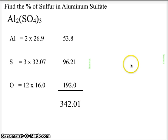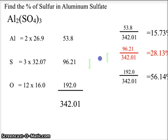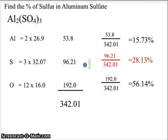So the question actually asks for sulfur, but let's do each of the elements and take a look at how they line up. When we take the 53.8 divided by that total 342.01, we get a 15.73 percent composition of aluminum in the molecule. The 96.21 divided by 342.01 gives us a percent of 28.13 percent sulfur.